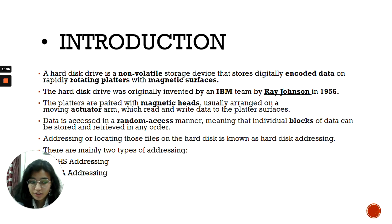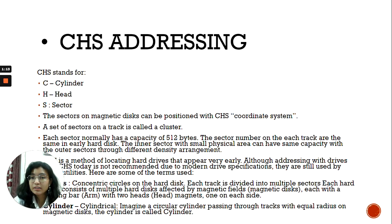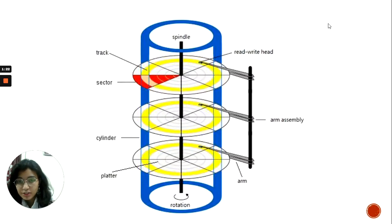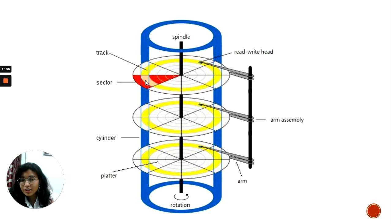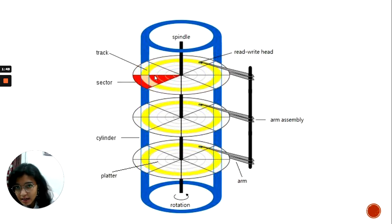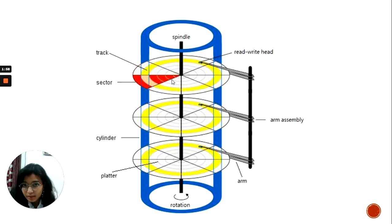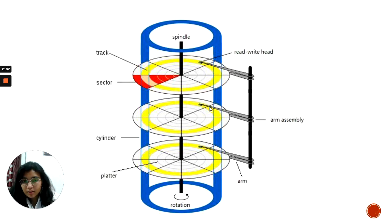There are two types of addressing: CHS addressing and LBA addressing. First, we will be talking about CHS addressing. CHS stands for Cylinder Head Sector. In cylinder head sector, you can see there is a cylinder — this hole is the cylinder. These are the heads. These are the platters — these disc-like structures are the platters. In those disc-like structures, these concentric circular lines are tracks, and these are sectors. A group of sectors makes a track, and a group of tracks makes a whole platter. This also has an arm assembly and a read-write head.